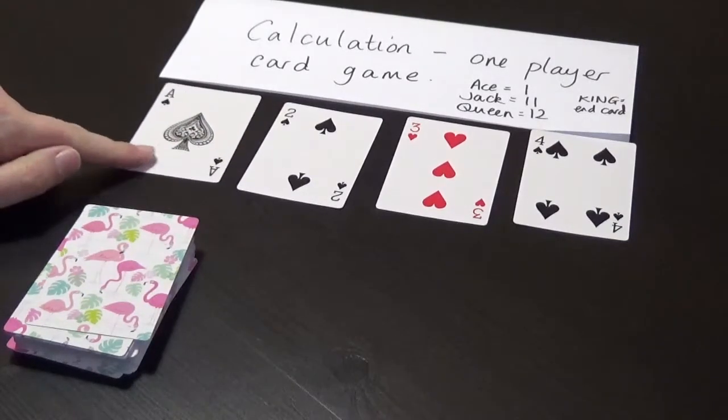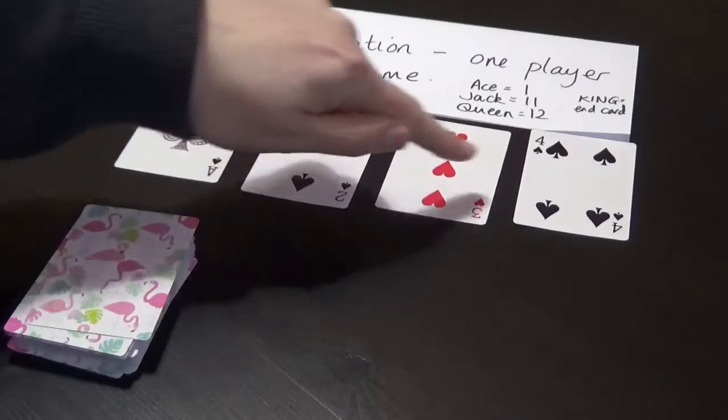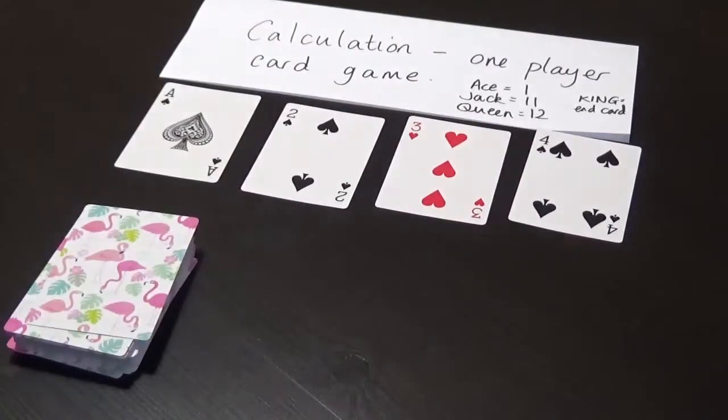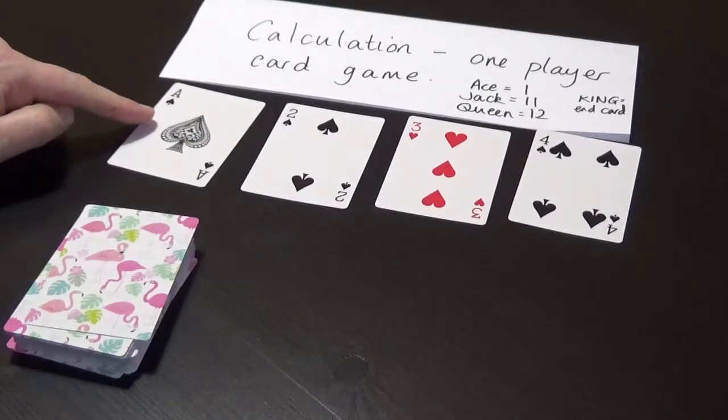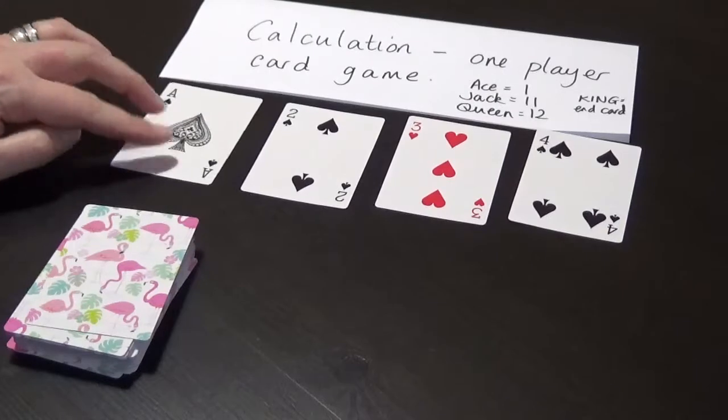Sort out any 1, 2, 3 and 4. And these are your building piles. On the 1, you're going to build up in 1s. So 1, 2, 3, 4, 5, 6, 7, 8, 9, 10, Jack, Queen, end with a King.